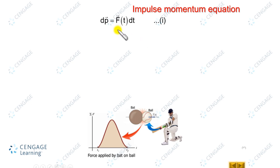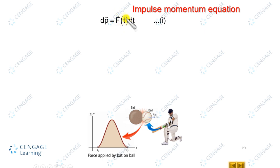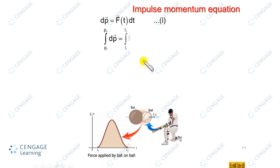Here we can observe on the left side: dp represents the change in linear momentum during time dt. dt is a very small, elemental time. And F(t) is the variation of the force between the ball and bat. Now we can find the net change in the ball's linear momentum due to collision if we integrate both sides with proper limits.